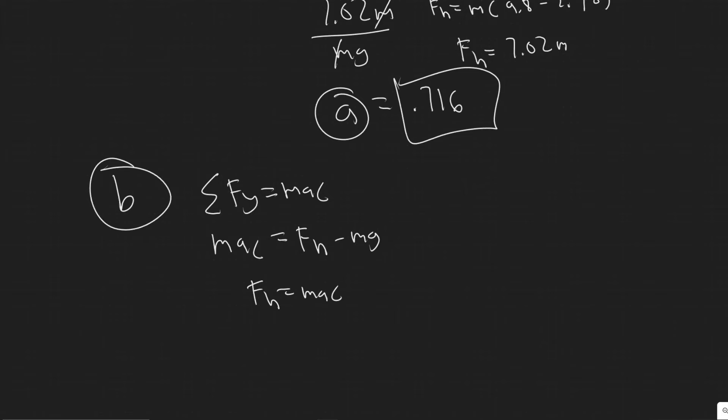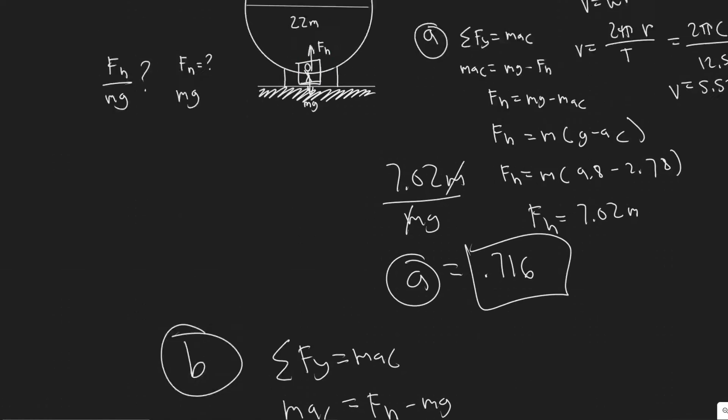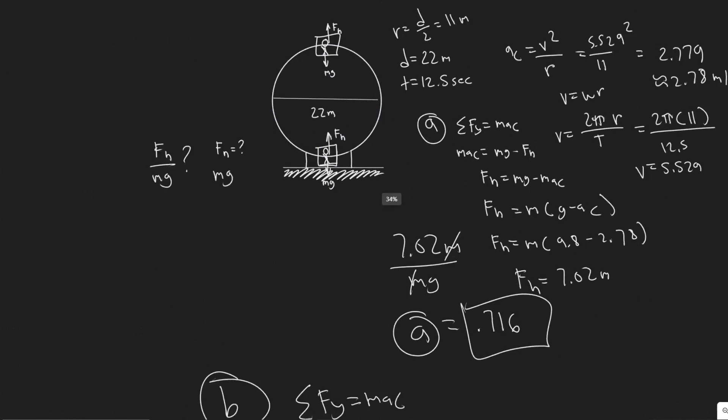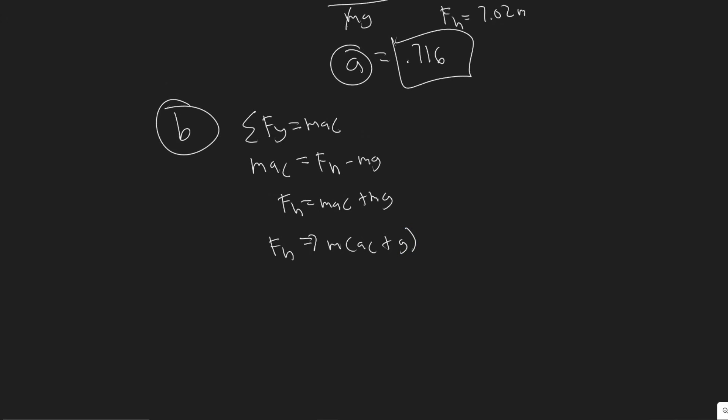So in this case, we're actually adding them. So this should tell you that our apparent weight is going to be greater than the real weight this time. So yeah, so we do M A C plus G. Keep in mind, this centripetal acceleration is the same no matter where you are on, right? It's just accelerating the whole thing. So A sub C doesn't change.